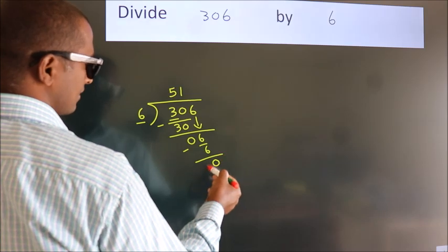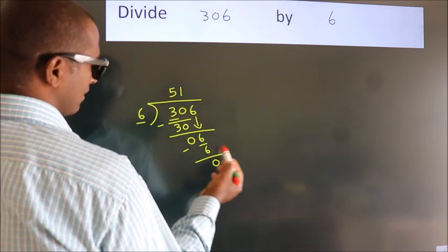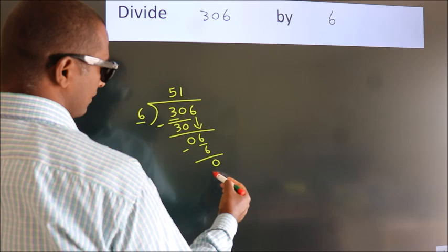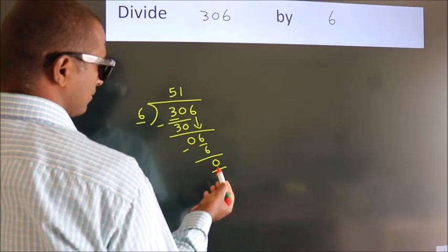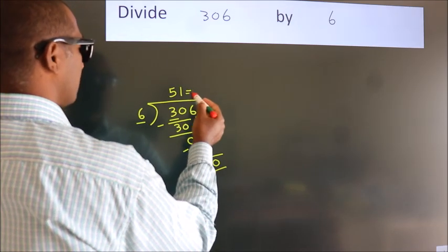After this, no more numbers to bring it down. And we got remainder 0. So, this is our quotient.